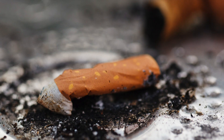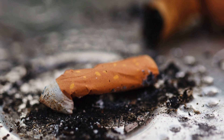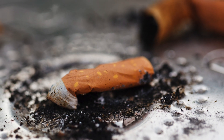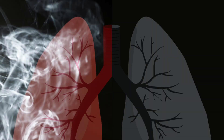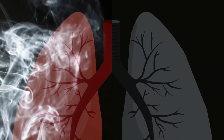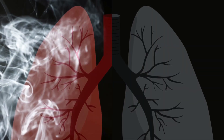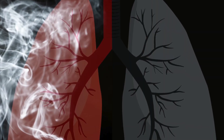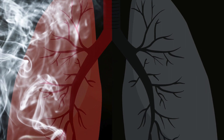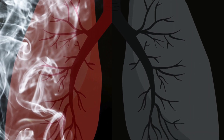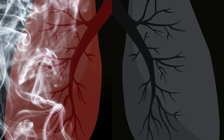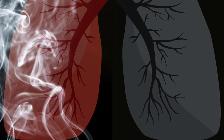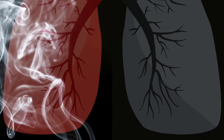Other toxic compounds in tobacco include tar. Tar accumulates in the lungs and turns them from pink to grey. This build-up can lead to the alveoli breaking down and reduces the surface area to volume ratio of the lungs, making it a lot harder to breathe and eventually leading to death.